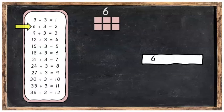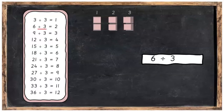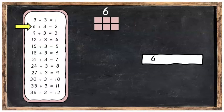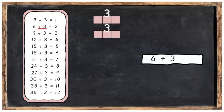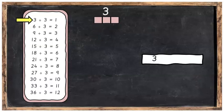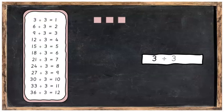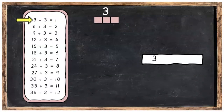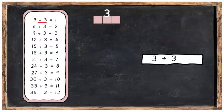6 divided into 3 equal groups, you're going to get 2 in each group. Or 6 divided into 3's, you're going to get 2 groups of 3. Finally, if you get the number 3 and divide it into 3 equal parts, you're going to have 1 in each part. Also, if you get the number 3 and divide it into a group of 3, you'll have 1 group of 3.